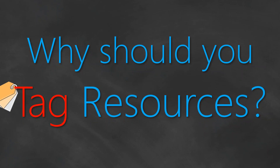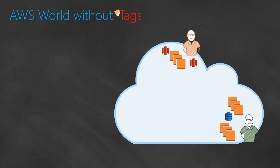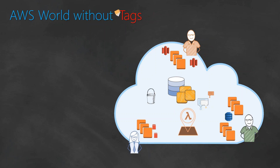First of all, we need to know what is the problem if we are not using tags. Let us imagine an AWS world without tags. Let us say you go ahead and sign up for a new account - your account is not having any resources right now. Then a developer comes and starts launching some resources for your business unit. After a period of time, you find that AWS is great and then another business unit comes in and adds some more resources to your account. After some time, these two business units and developers need to share some information, so they go ahead and share some common databases and EC2 instances.